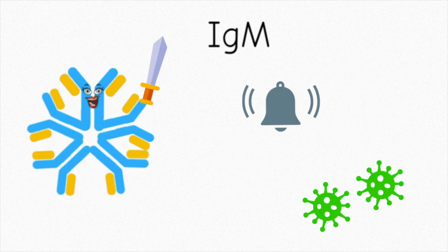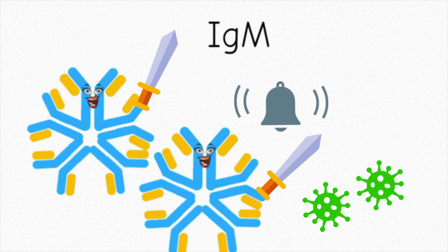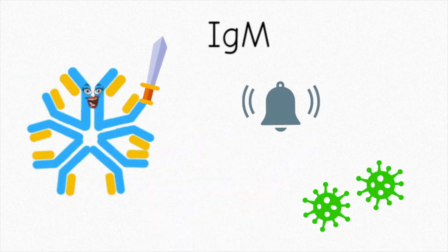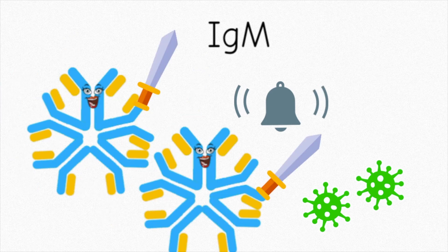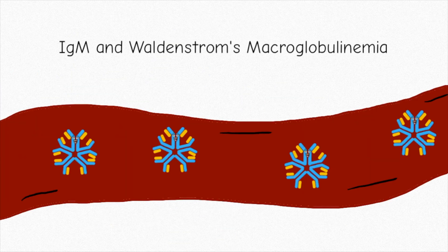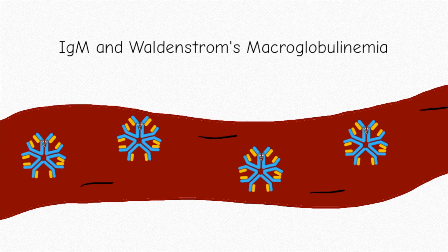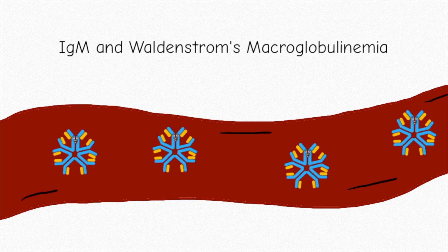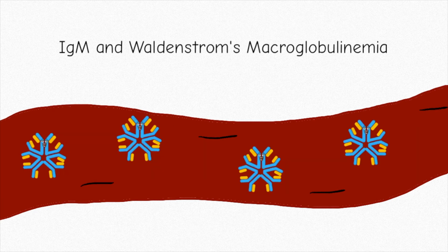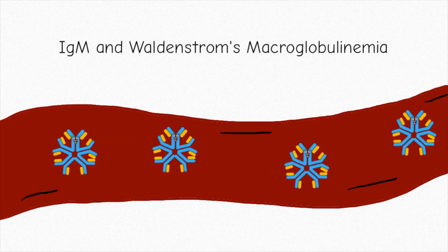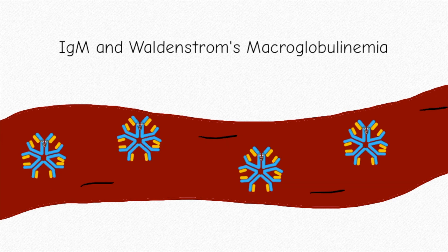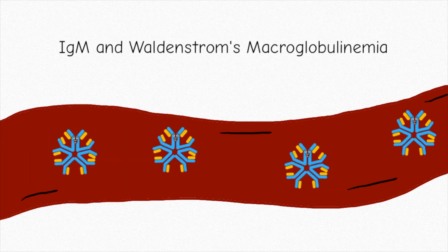IgM helps the immune system fight infections in the blood. Usually, IgM is the first immunoglobulin that's produced when exposed to a foreign substance. Unfortunately, because IgM is so large, it can't pass through blood vessel linings into tissues, and a high number of IgMs can actually make the blood viscous. This can be a problem in a multiple myeloma-related illness called Waldenstrom's macroglobulinemia.